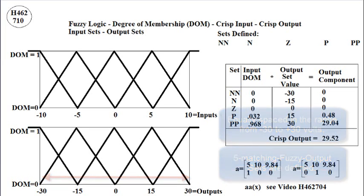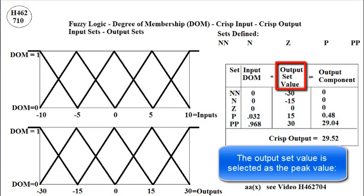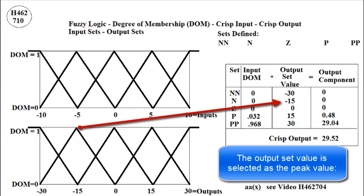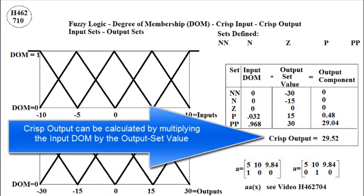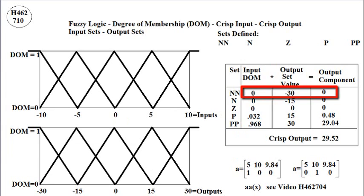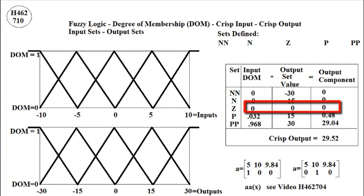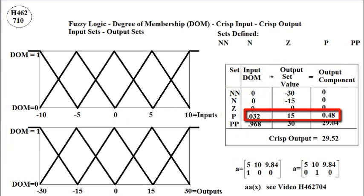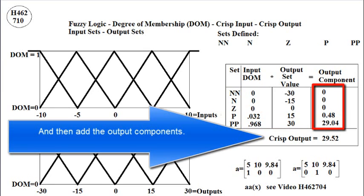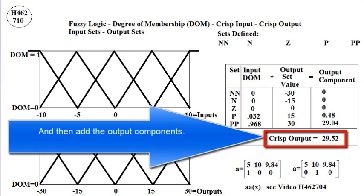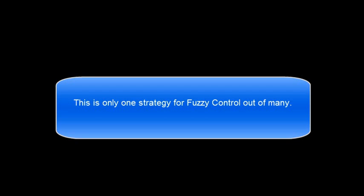The output set value is selected as the peak value: negative 30, negative 15, 0, 15, and 30. The crisp output can be calculated by multiplying the input degree of membership by the output set value: 0 times negative 30, 0 times negative 15, 0 times 0, 0.032 times 15, and 0.968 times 30. Then add the output components to form the crisp output. This is only one strategy for fuzzy control out of many.